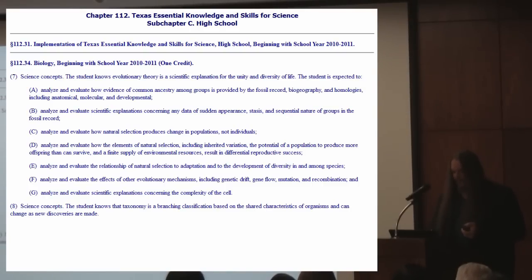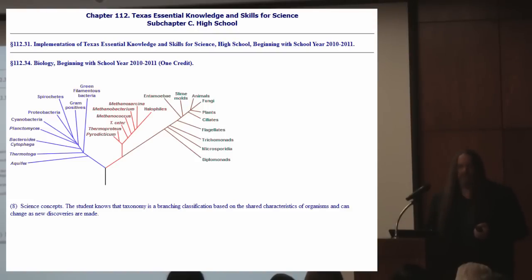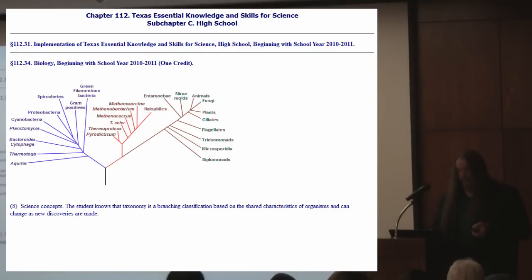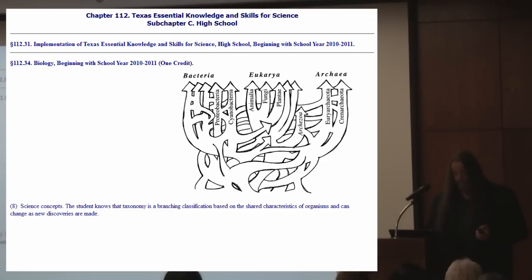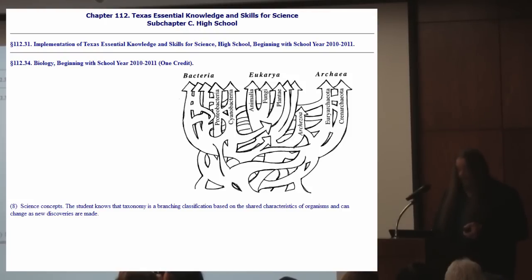The student knows that taxonomy is a branching classification based on shared characteristics of organisms and can change as new discoveries are made. One new discovery worth mentioning is that at the level of single-celled organisms, while you do have evolution going on, individual microbes tend to get genetic material directly from each other through horizontal gene transfer — swapping or contaminating their genes by direct contact with communicable microbes. For example, the mitochondria of animals and fungi and the chloroplast of plants were evidently both taken directly from bacteria through a process called endosymbiosis. This means the phylogenetic tree of life doesn't have a trunk or a root — it grows out of a web-like mesh of microbial relationships.